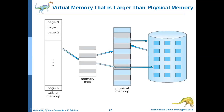Virtual memory is usually larger than physical memory. You can see in the memory mapping diagram: this is physical memory, and this is virtual memory — with pages from page zero up to page V. We conclude that the size of virtual memory is greater than physical memory. Why do most real processes not require all their pages? First, error handling code is not needed until that specific error occurs, and certain features are very rarely used.